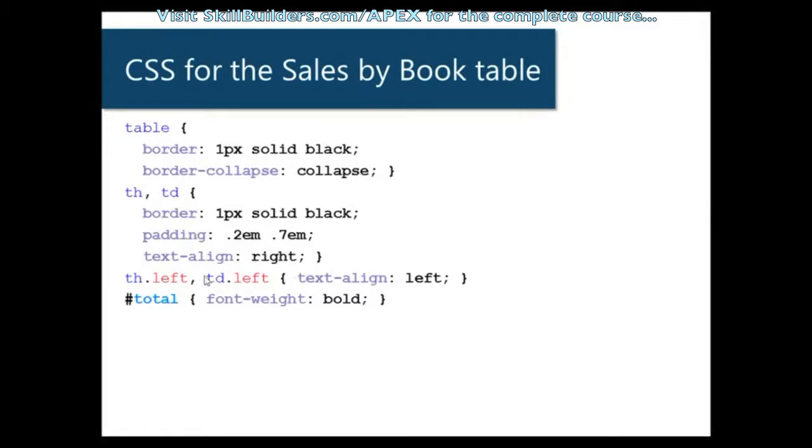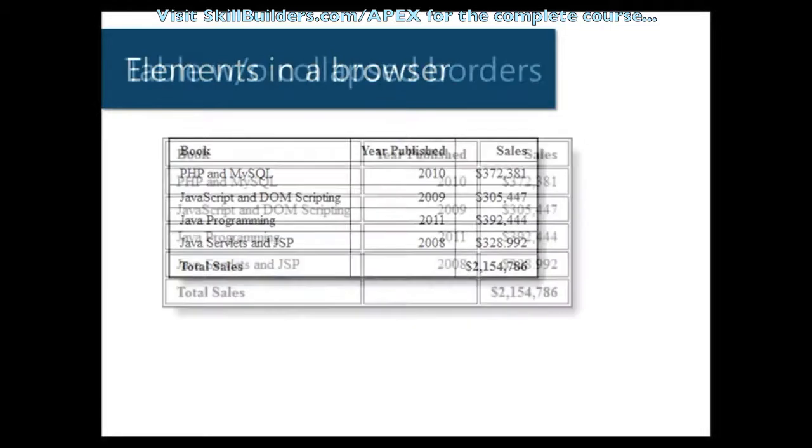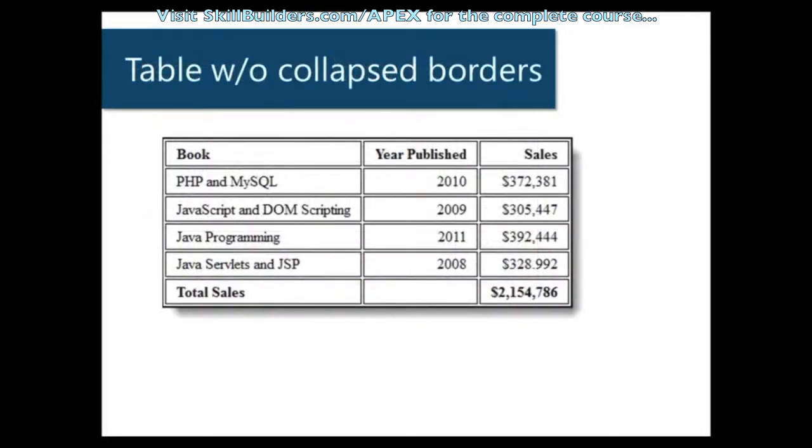Then we have padding, text align. And here's where we're targeting that left class and align the text to left. And finally, at the very bottom, that last row, we set the font weight to bold. Render that in a browser and we get something like this. We're getting better here, especially from this.